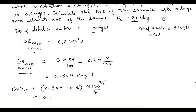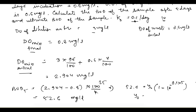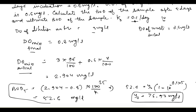So BOD5 = 2.104 × 25 = 52.6 mg per liter. For the ultimate BOD: Y5 = Y0 × (1 − 10^(−0.1 × 5)), since K is base 10. From here, Y0 equals 76.93 mg per liter. So BOD5 is 52.6 and ultimate BOD is 76.93 mg per liter.